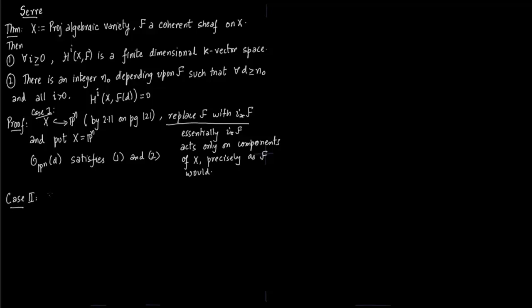Case 2 is for the arbitrary coherent sheaf. You start with S as a graded ring, so S equals k[x0,...,xn], and F equals M tilde where M is a graded S-module of finite type. The cohomology group H^i where i is greater than n+1 will be zero since we have only n+1 variables.